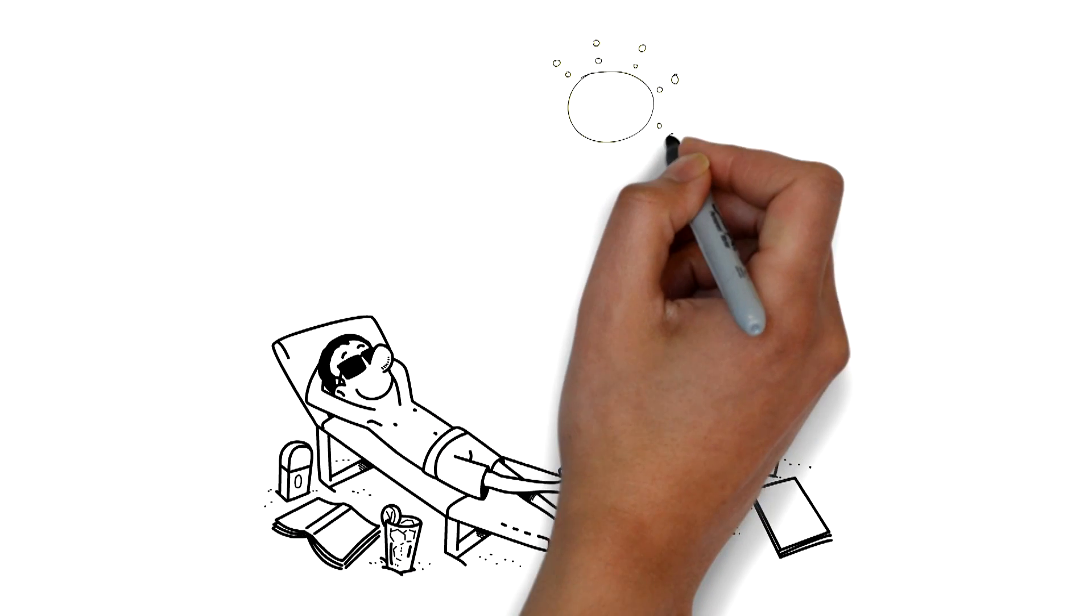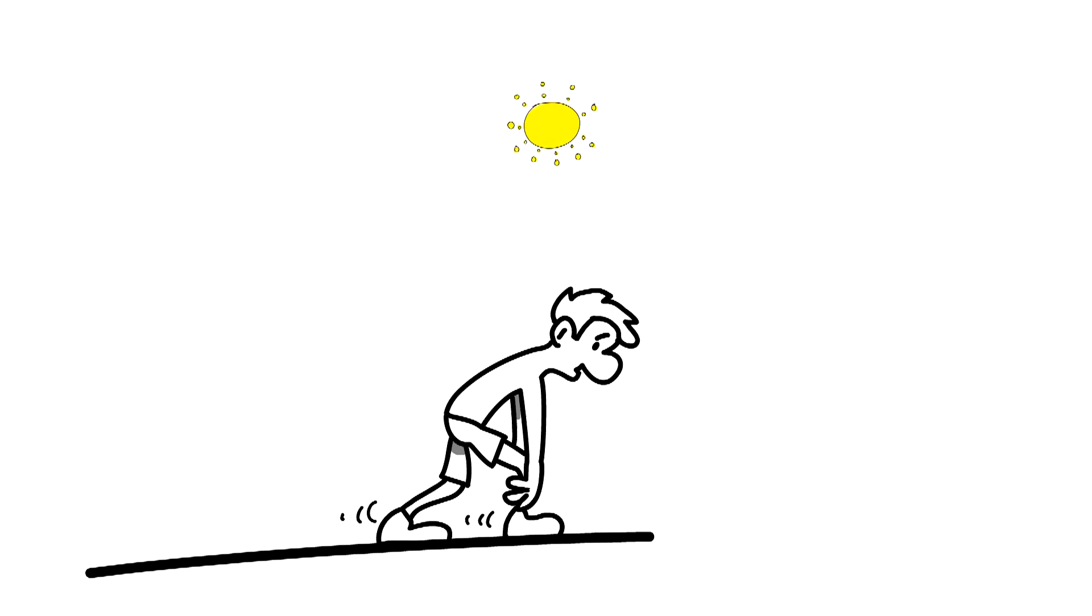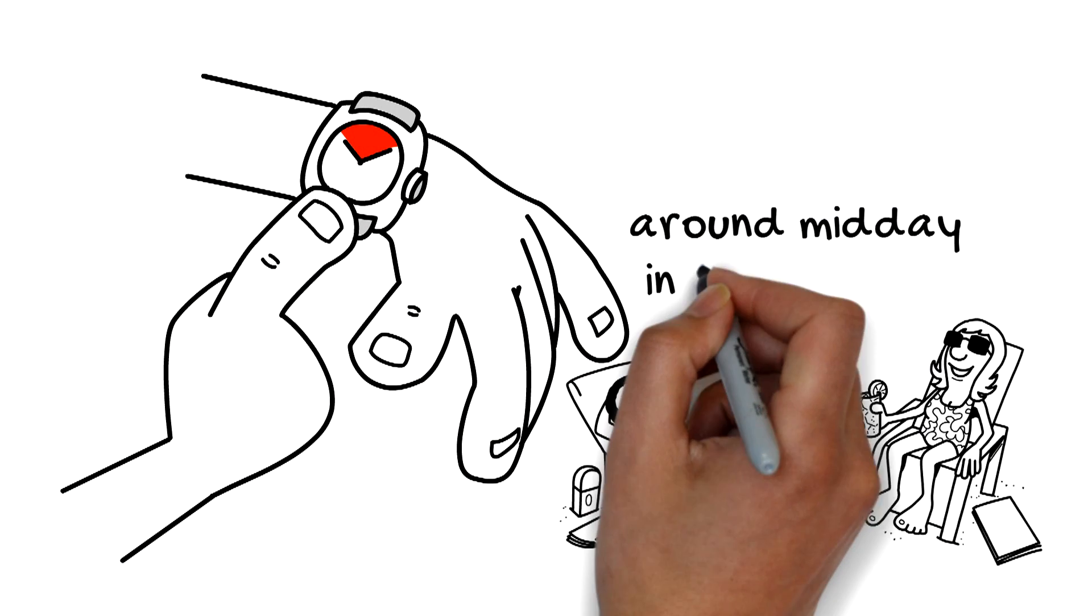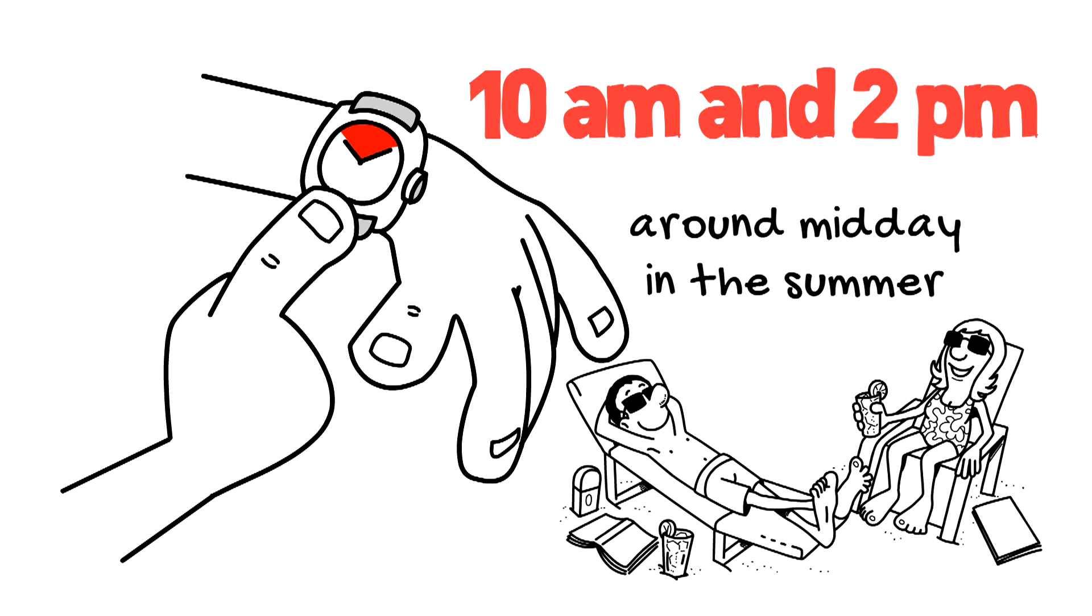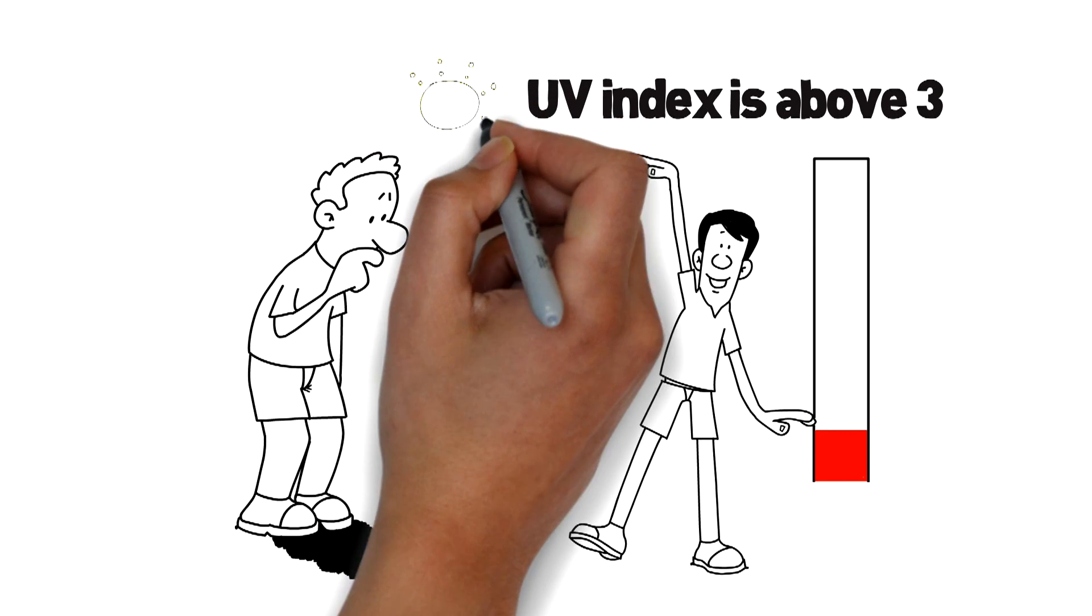90% of our body's vitamin D comes from our skin being exposed to the UVB rays from sunshine. UVB is a very short ray and must be directly overhead to make it through the atmosphere. The best time for exposure is around midday in the summer between 10am and 2pm when the UV index is above 3 and your shadow is shorter than your height.